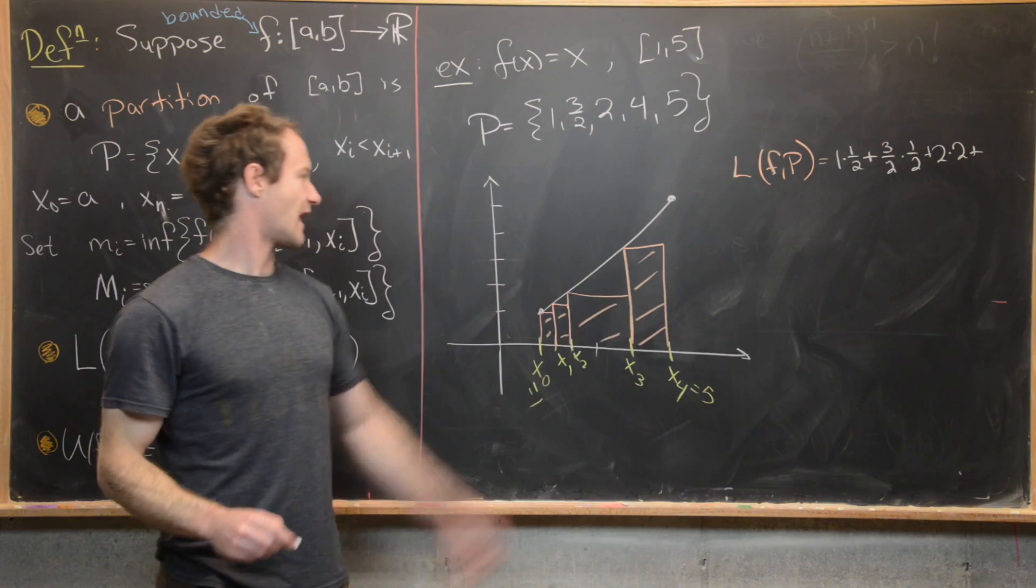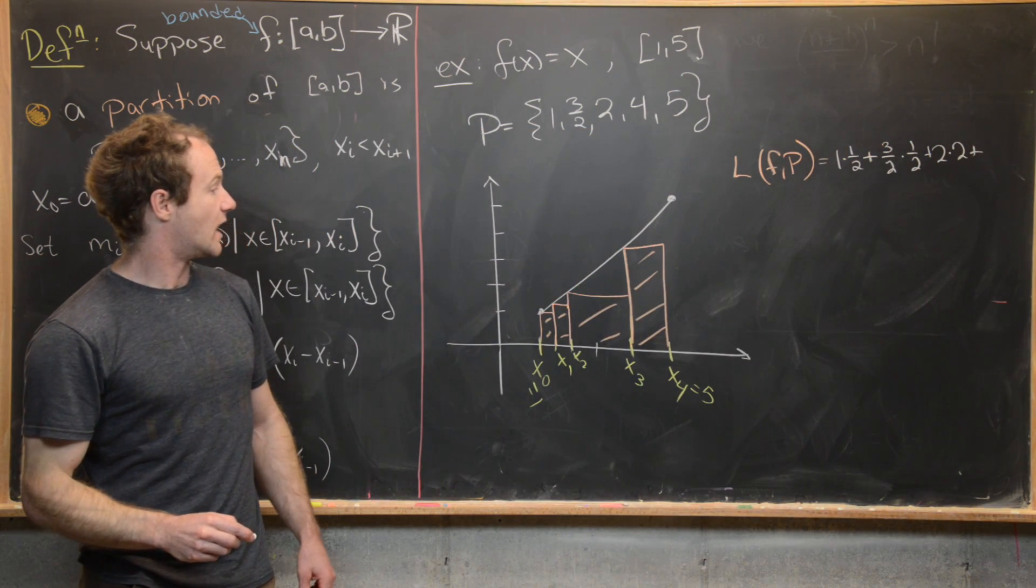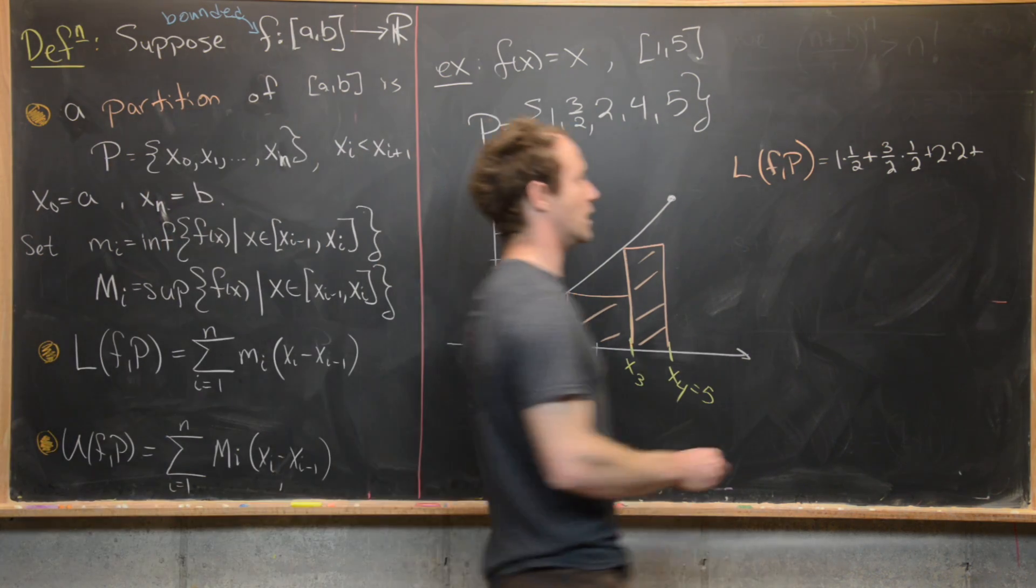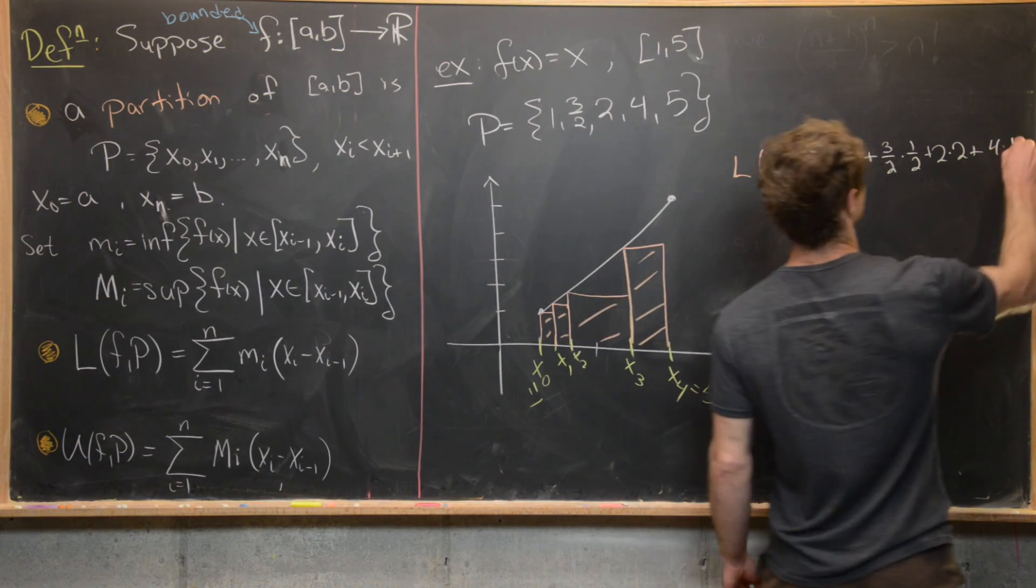And then finally, the height of the last triangle is 4. So my scale isn't great, but it's 4 and my width is 1. So I've got plus 4 times 1.